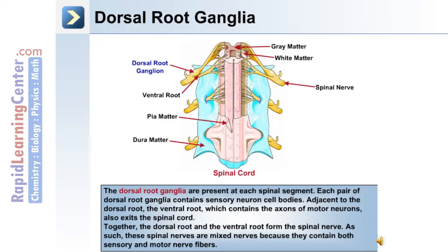The dorsal root ganglia are present at each spinal segment, and each pair of dorsal root ganglia contains sensory neuron cell bodies. Adjacent to the dorsal root is the ventral root, which contains the axons of motor neurons. Together, the dorsal root and ventral root form the spinal nerve. As such, these spinal nerves are mixed nerves because they contain both sensory and motor nerve fibers.